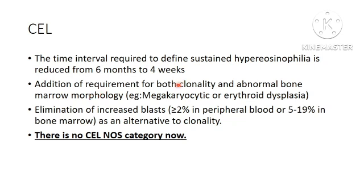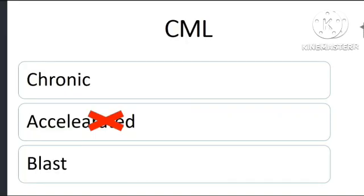Clonality testing is now required, along with abnormal bone marrow morphology such as megakaryocytic or erythroid dysplasia. Increased blasts as an alternative to clonality have been eliminated, and there is no longer a CEL-NOS category in the MPN category. Additionally, the accelerated phase has been removed from CML — previously there used to be three phases.